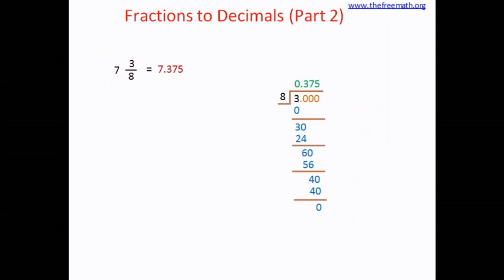This is one method to convert this fraction to a decimal. Can you think of any other method? 7 and 3 over 8 is a mixed number. That means we can convert this to an improper fraction. And if we do that conversion, it would look like this, 7 eights are 56, 56 plus 3 is 59. So the fraction would be 59 over 8.